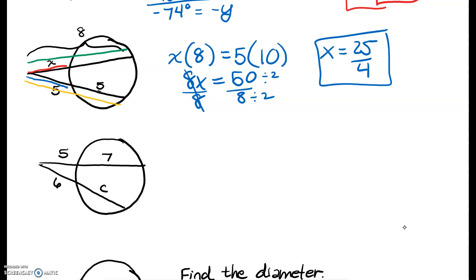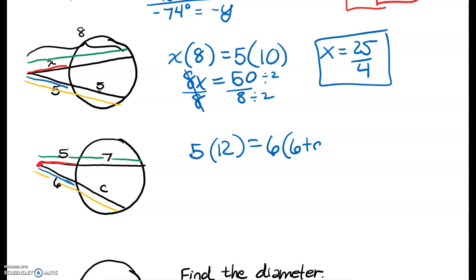The next one is very similar. Again, we're looking for segments, and I notice that the intersection of these two lines is outside my circle. So it's the outside part times the whole part equals the outside part times the whole part. The outside part is the red that I outlined — that's 5. The whole part is the red part plus the inside part, so the whole is 5 plus 7, that's 12. And that equals the outside, which is 6, times the whole, which is 6 plus C.